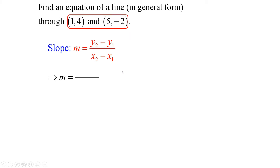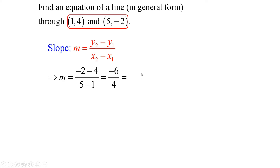Let's substitute and find our slope. The Y coordinate of the second point is negative 2, minus the Y coordinate of the first point, 4: negative 2 minus 4. The X coordinate of the second point is 5, minus the X coordinate of the first point, positive 1. Simplifying: negative 2 minus 4 is negative 6, and 5 minus 1 is 4. Reducing, negative 6 over 4 becomes negative 3 over 2. Typically we write slopes in simplified, reduced form.